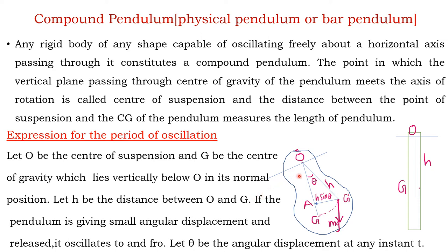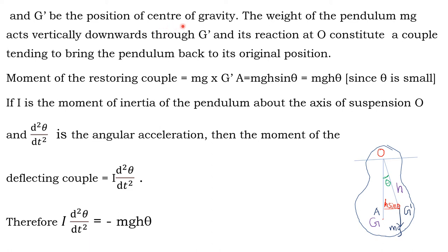Let the pendulum be given a small angular displacement theta. Then the center of gravity G will be shifted to G'. At the point G', the weight of the pendulum Mg, acting vertically downward, and its reaction at the point O constitute a couple or torque. Because of this couple, the pendulum comes back to its original position. Therefore, this couple is called the restoring couple.